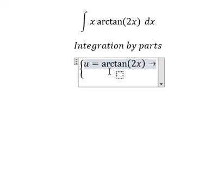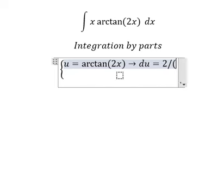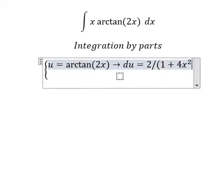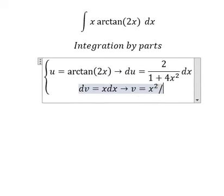Then we need to find first the differential of this one, and we got 2 over 1 plus 4x² dx. For dv, that is x dx. The integration of this one, v, is x² over 2.